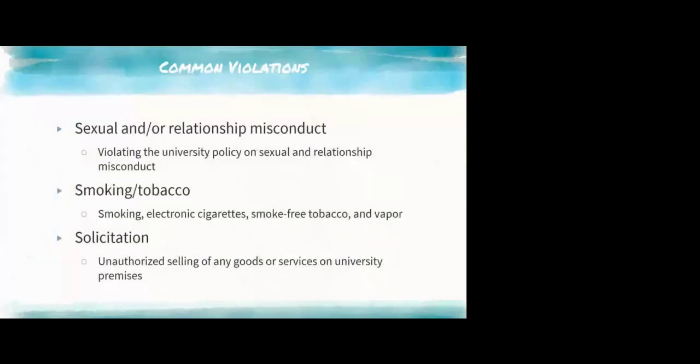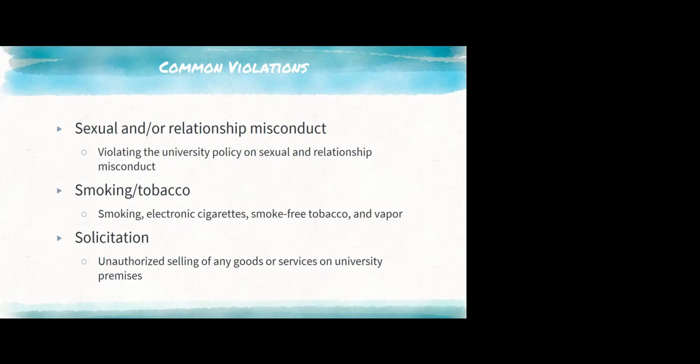Sexual and relationship misconduct has an entire set of university policies behind it that you'll learn more about throughout training. If students create unsafe or uncomfortable environments based on sexual or relational issues, it falls here. Smoking and tobacco: Michigan Tech is a smoke-free campus, and that includes cigarettes, cigars, electronic cigarettes, and vapor pens. Solicitation covers businesses or individuals coming into residence halls to sell things without proper approval — we want to protect students from being harassed by that.